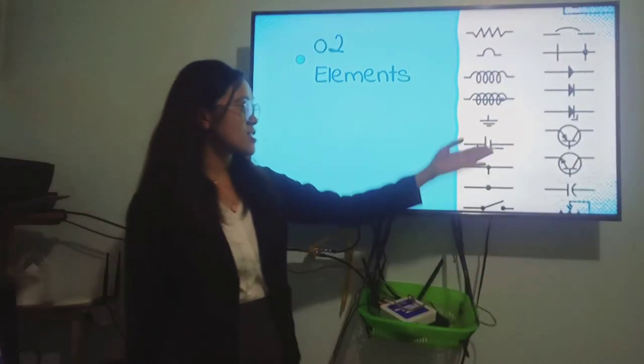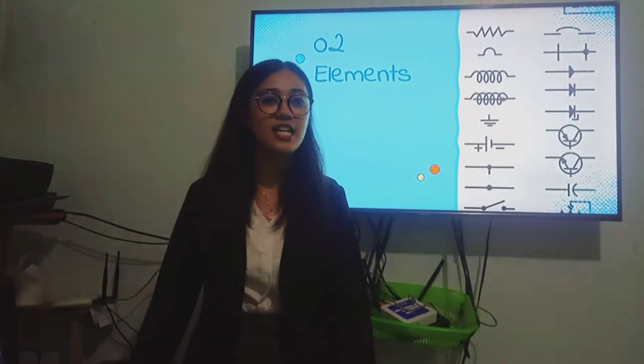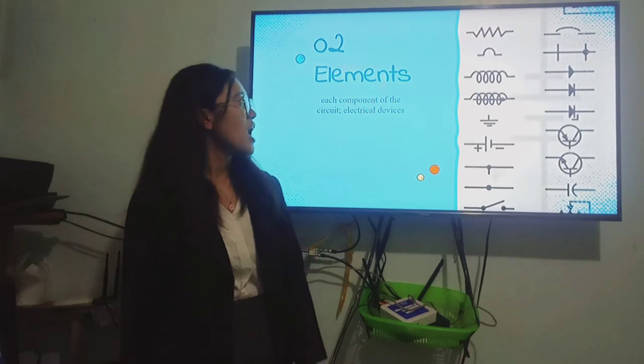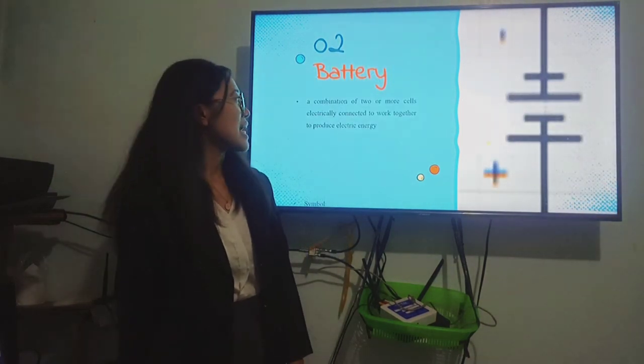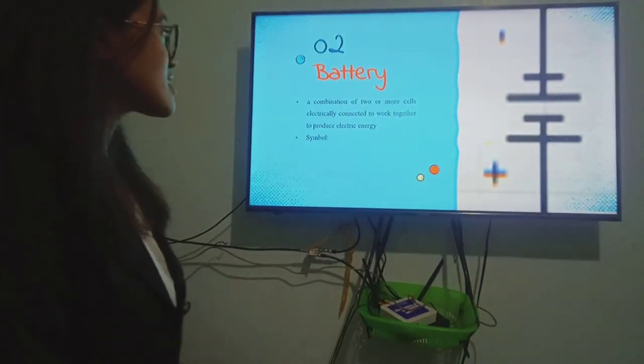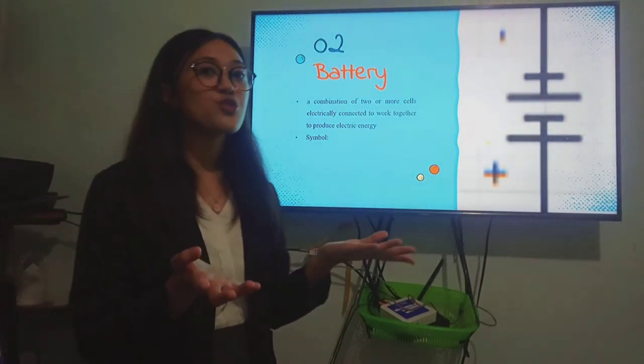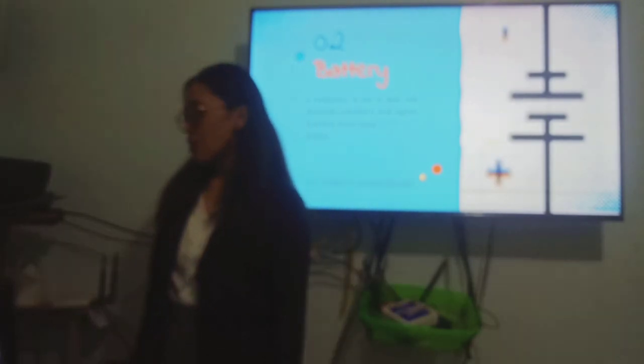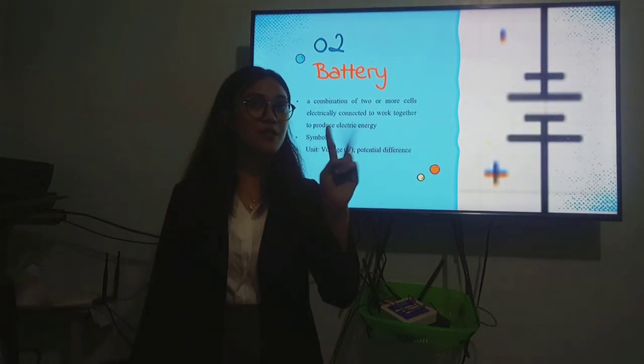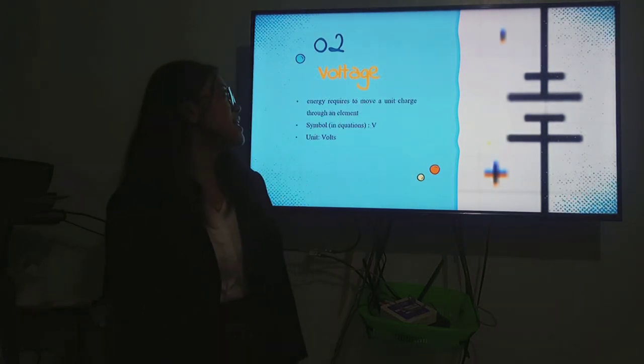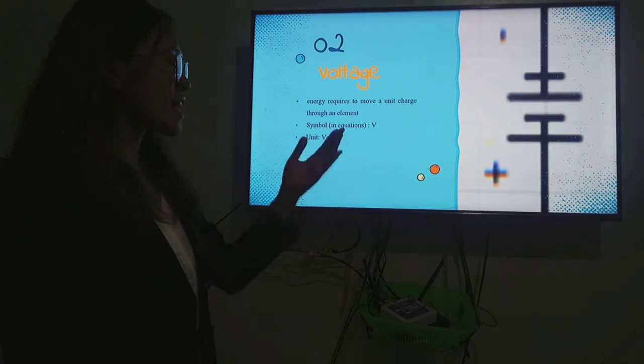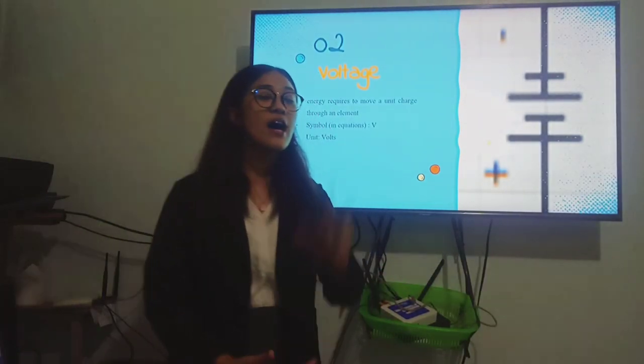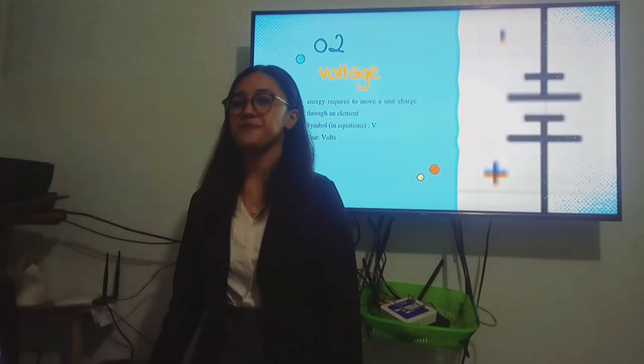Next, let us define the elements. These are examples of elements in a circuit diagram. Elements are the components of the circuit or the electrical devices in a circuit. First element is the battery. What is a battery? It is a combination of two or more cells electrically connected to work together to produce electric energy. And this is the symbol. There is a negative and positive sign. The unit of a battery is voltage or capital V, which is also known as the potential difference. What is voltage? Voltage is the energy that requires to move a unit charge through an element. And the symbol of voltage in equations is also capital V, which means volts.